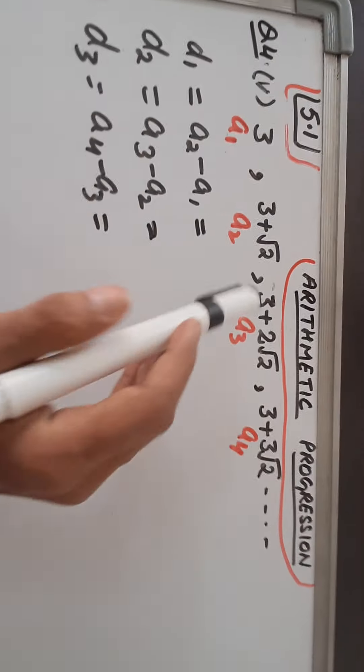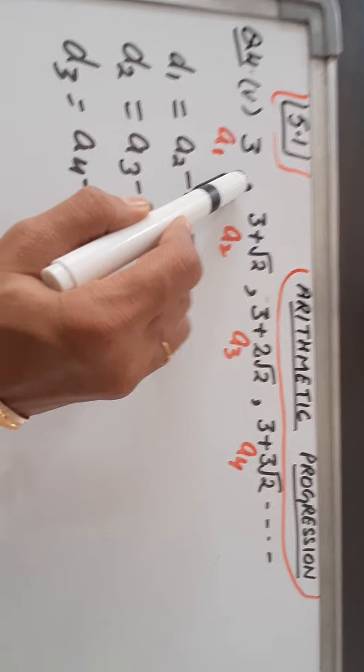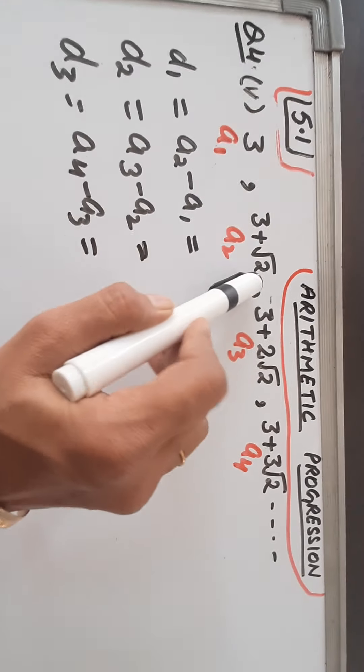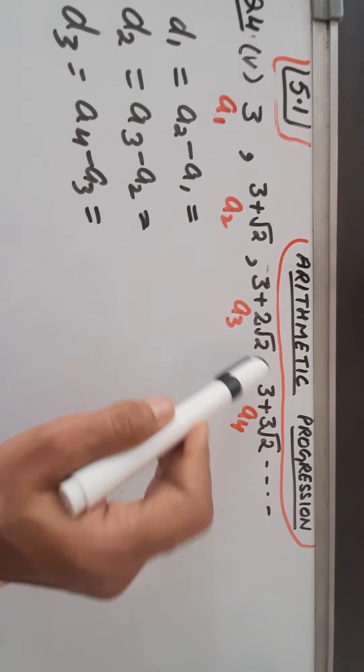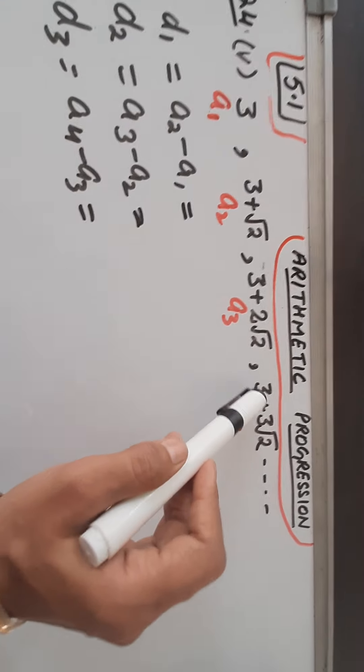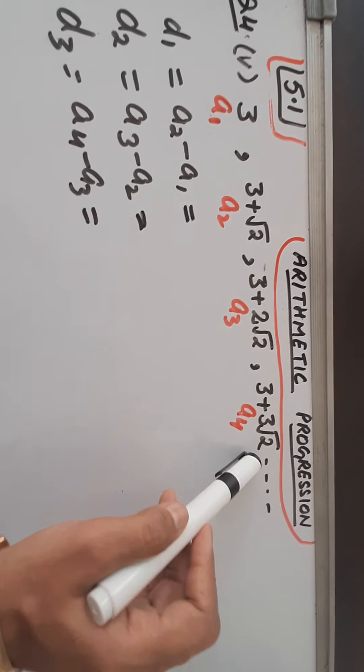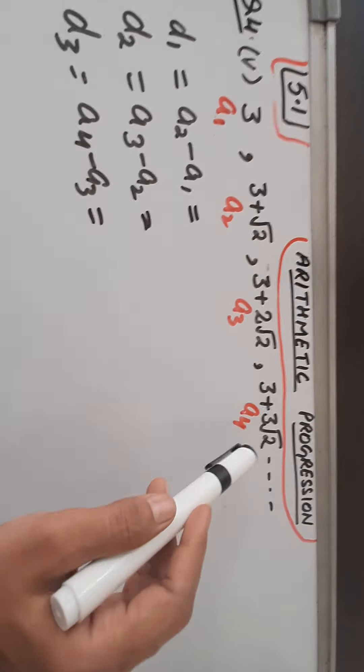Now dear students, do the fourth part yourself — it is just similar to this, so try it yourself. Now let's do the fifth part. In this, the series of numbers is given as: 3, 3 plus root 2, 3 plus 2 root 2, 3 plus 3 root 2. Four terms are given.